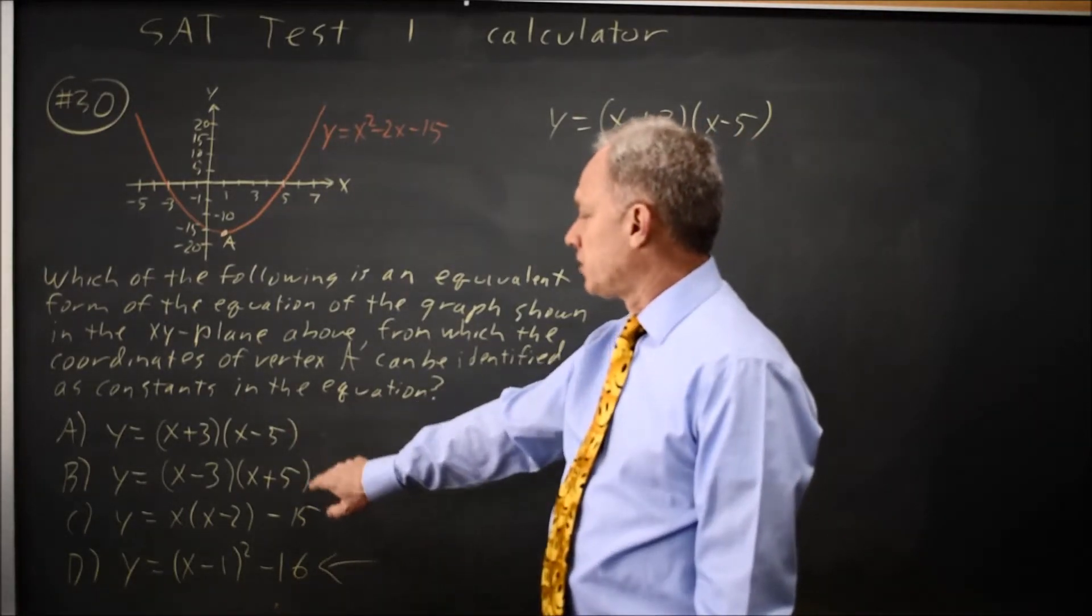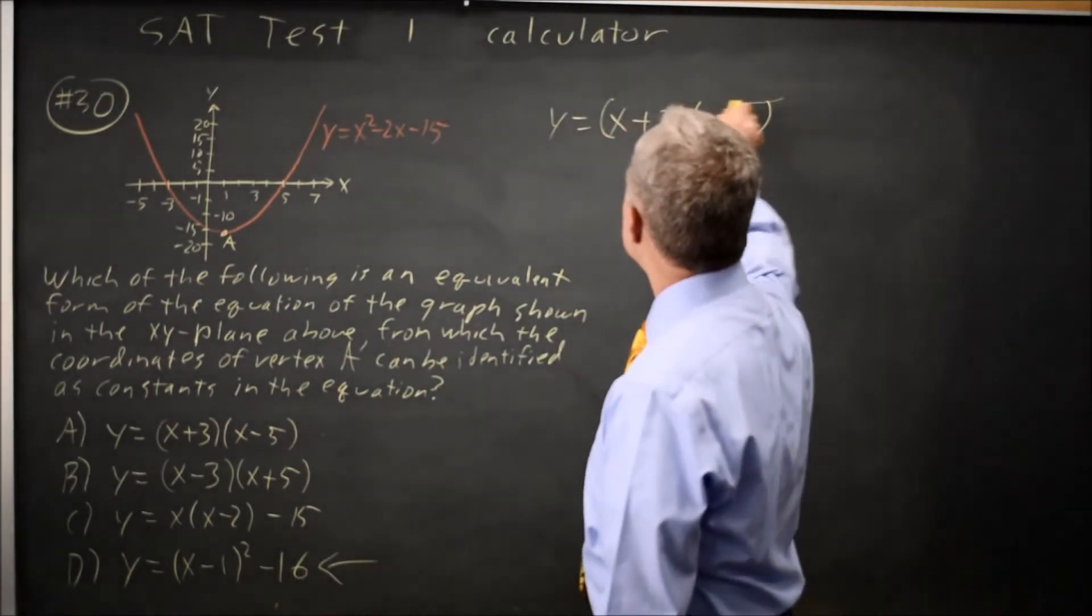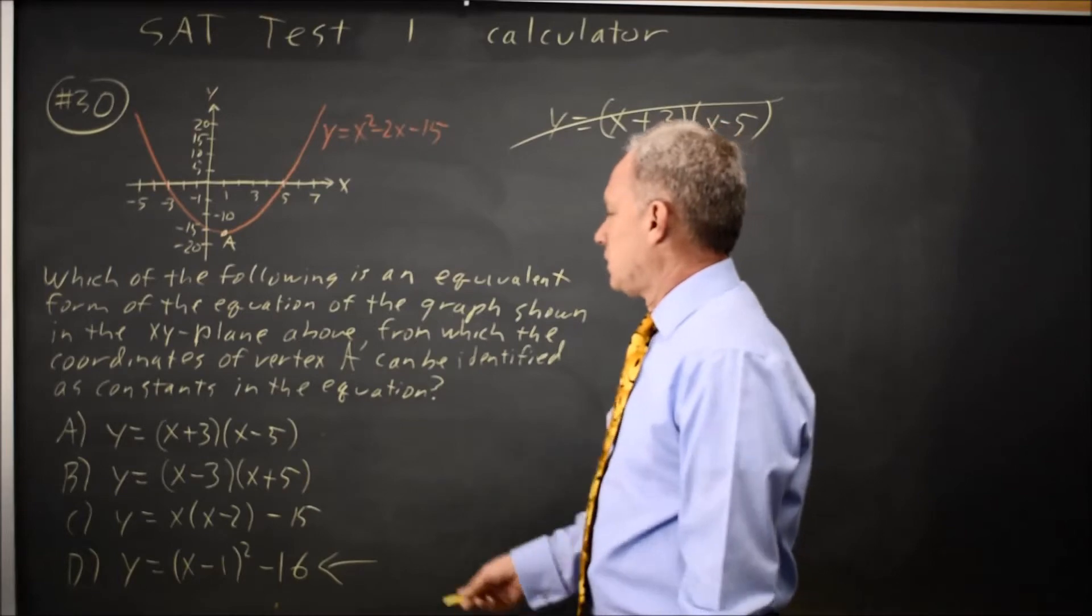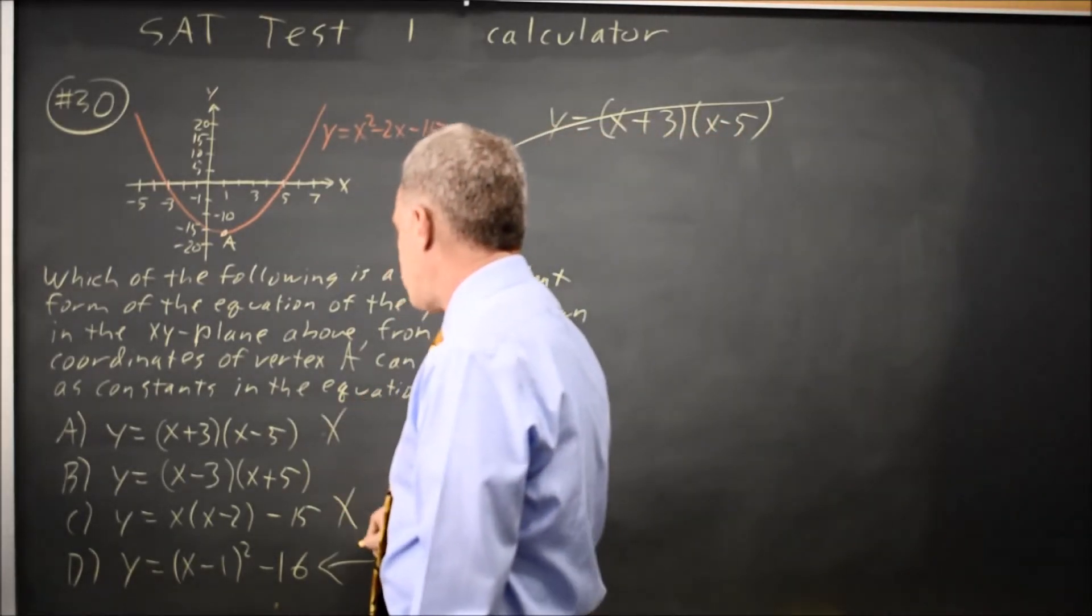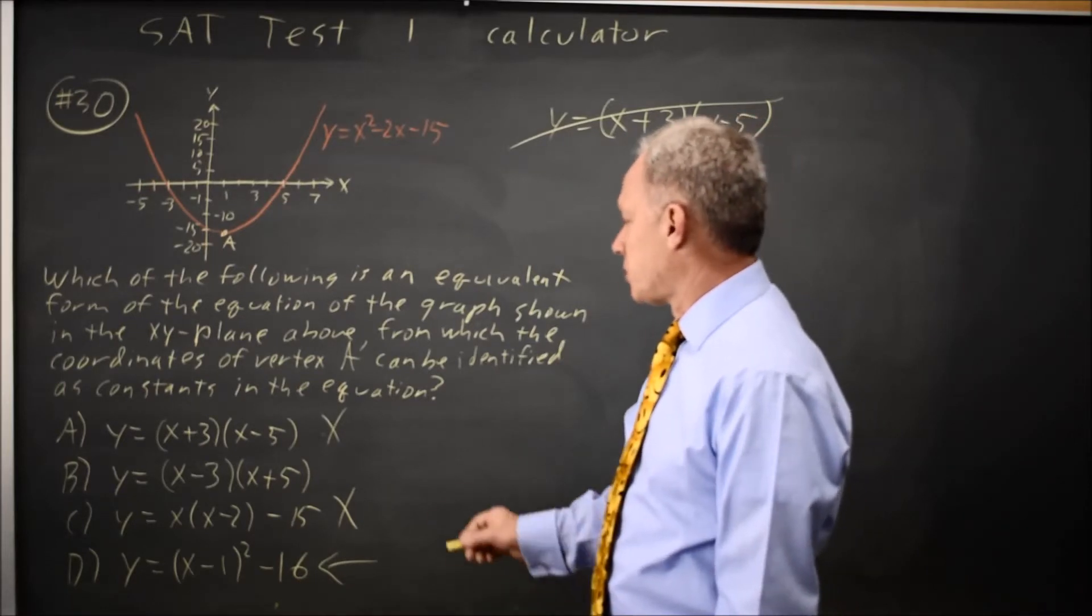Choice A is equivalent, and choice C is equivalent, but they do not answer the question. So this was wrong, and C was wrong because they don't answer the question even though they are equivalent forms of the equation.